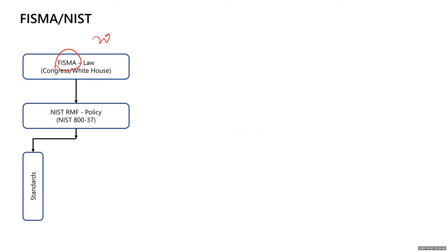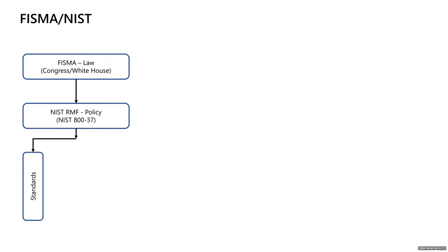There was a law passed called the FISMA law, all the way back in 2002, and then it got modernized in 2014. It was initially called the Federal Information System Management Act and then became the Modernization Act. Part of that modernization when Obama signed it in 2014 was to require modernization of all federal systems. That's why lately you keep hearing about modernization — one of the requirements is to move to cloud.